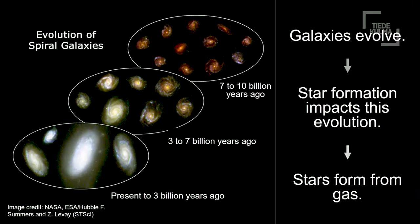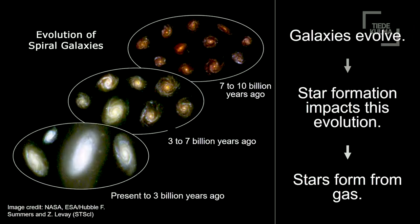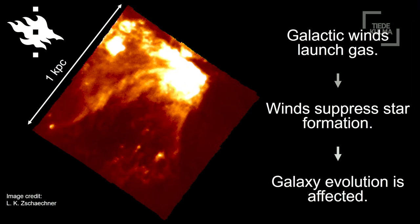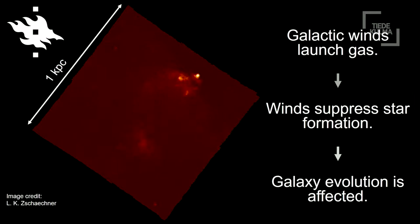So where do they fit in the big picture? Why do we care about galactic winds? Basically, galaxies evolve over time. The galaxies in the early universe look very different from the galaxies that we see today in the local universe. A lot of this depends on their star formation, and stars form from gas. So if we have galactic winds launching gas from these galaxies, they're going to be taking away some of the star formation. Galactic winds suppress and quench star formation, and thus they affect galaxy evolution.